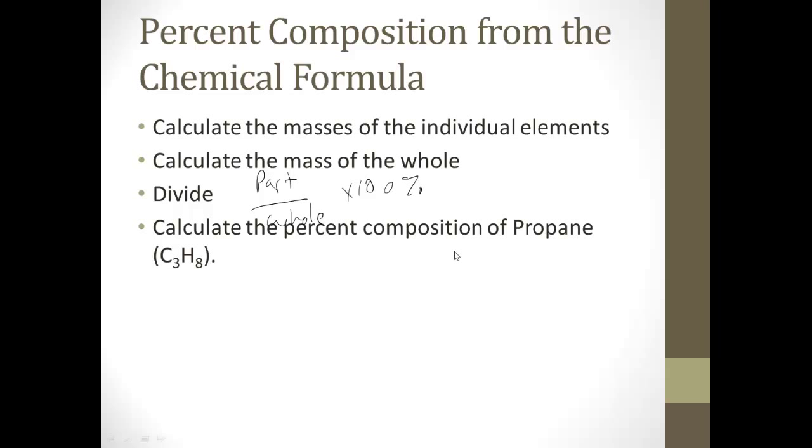So let's do an example. Calculate the percent composition of propane, C3H8. So if we say carbon has a mass of 12.011, hydrogen has a mass of 1.0079, and there's three carbon, so it's times three. Eight of these, so it's times eight. And the mass of the whole is going to be 12.011 times three. So the carbon part was 36.033. The hydrogen part, 1.0079 times eight, and I get 8.0632.